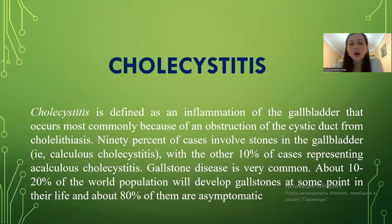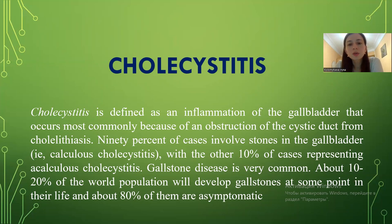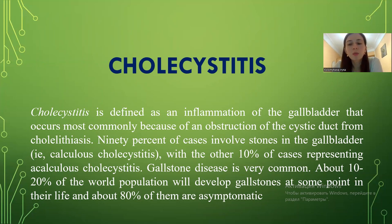Cholecystitis is defined as inflammation of the gallbladder that occurs most commonly because of an obstruction of the cystic duct from gallbladder lithiasis. 90% of cases involve stones in the gallbladder, while the other 10% are representative of acalculous cholecystitis. Gallstone disease is very common — about 10–20% of the world population will develop gallstones at some point in their life, and about 80% of them are asymptomatic.